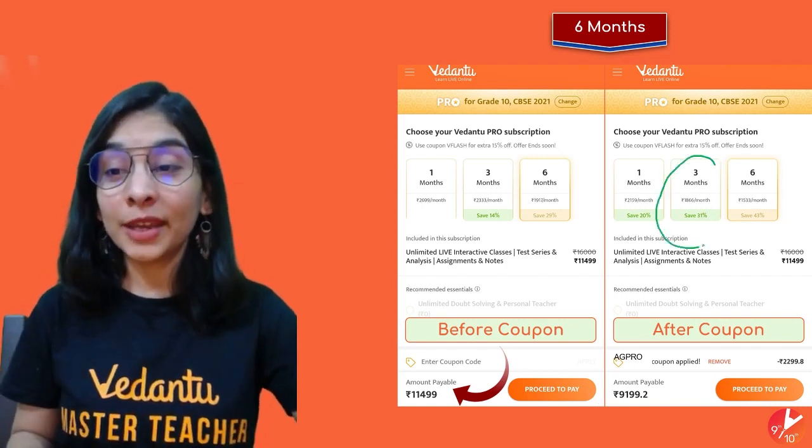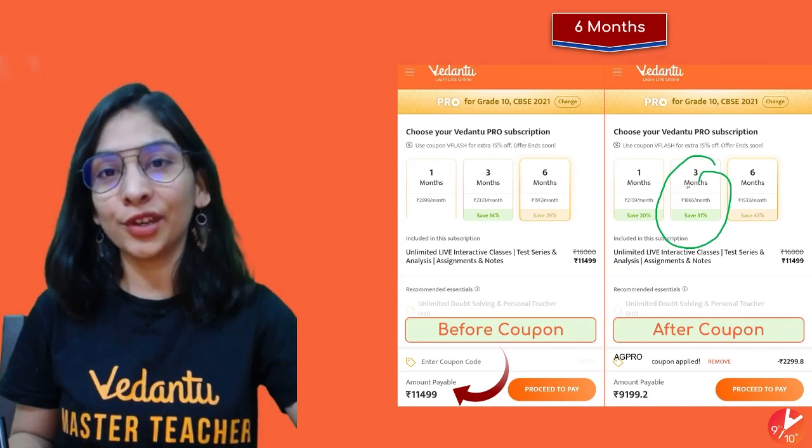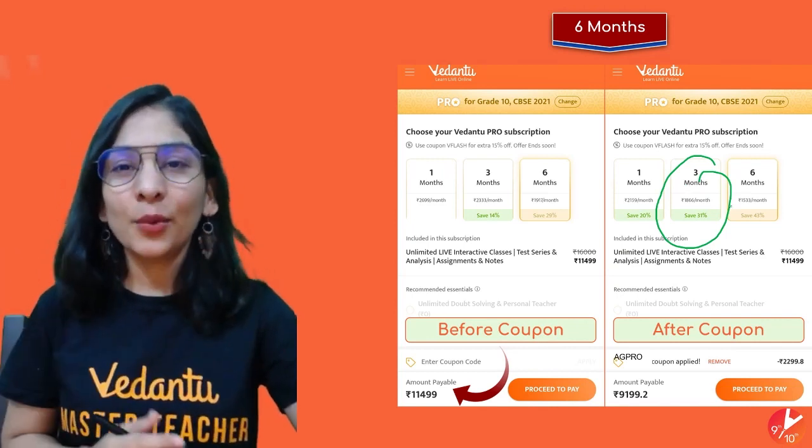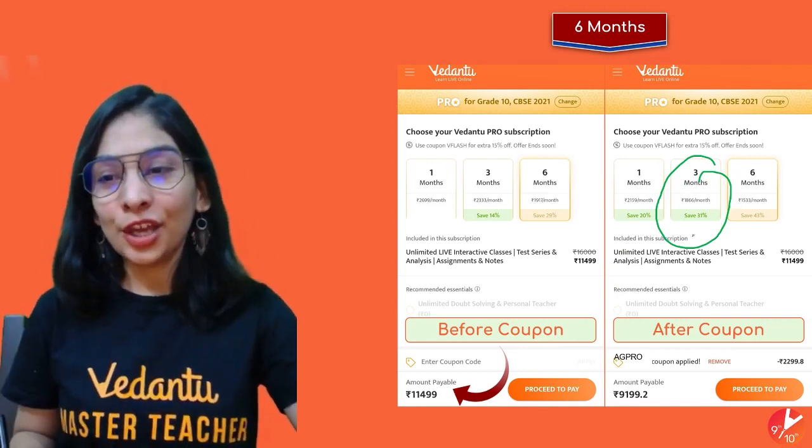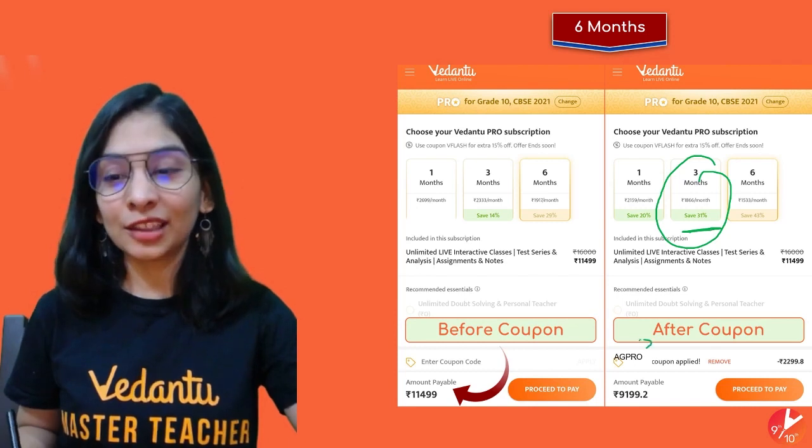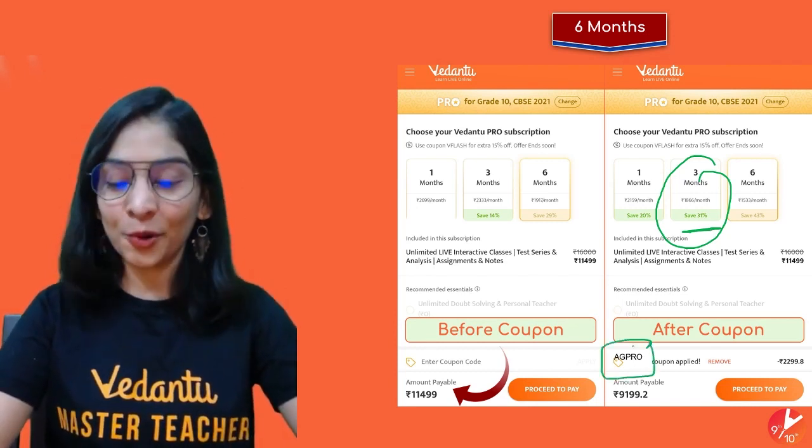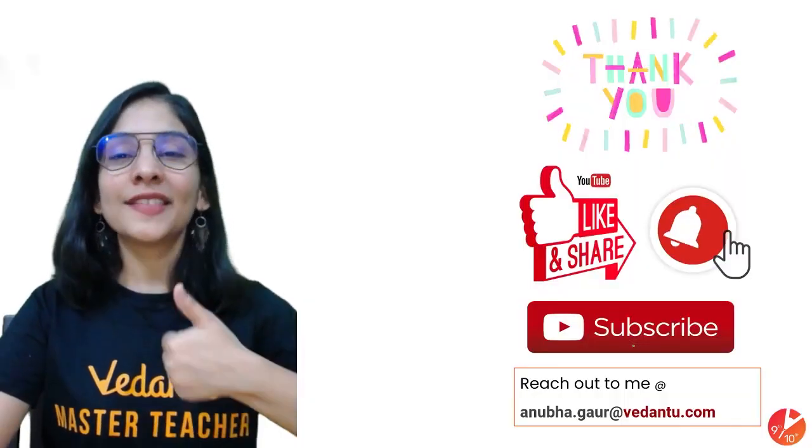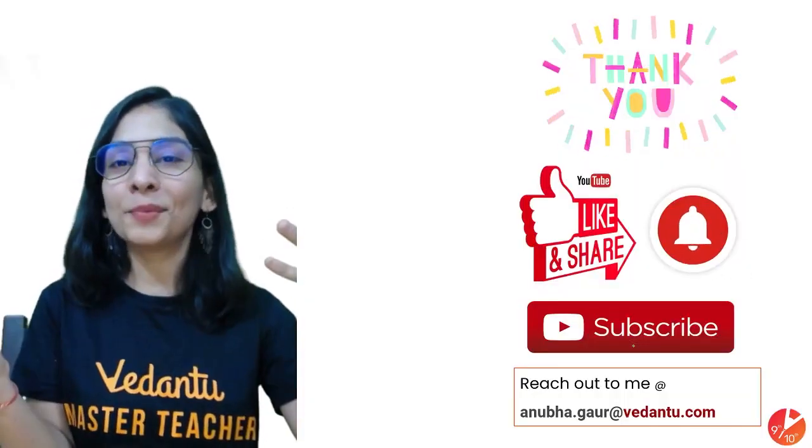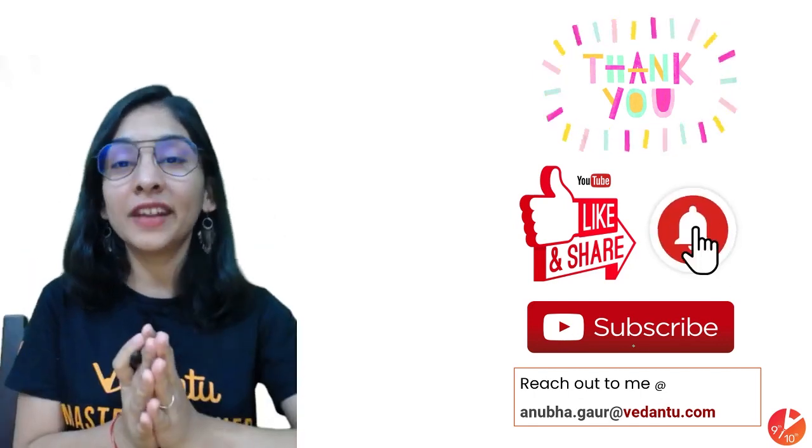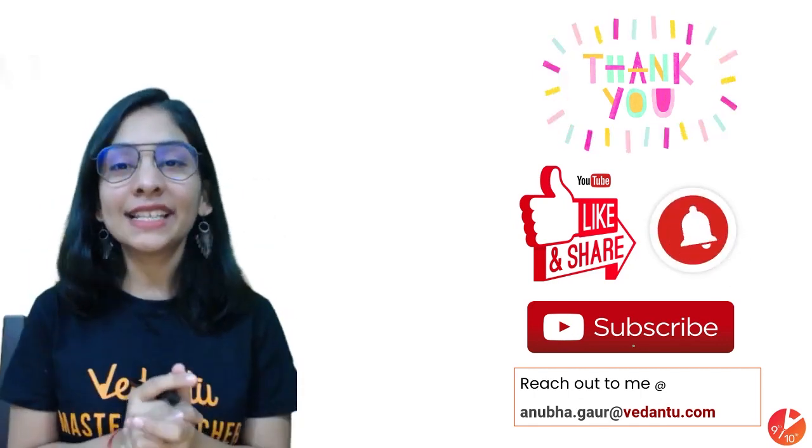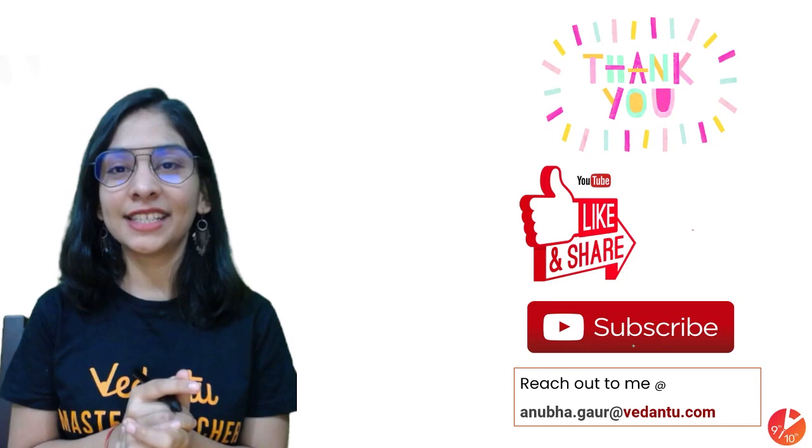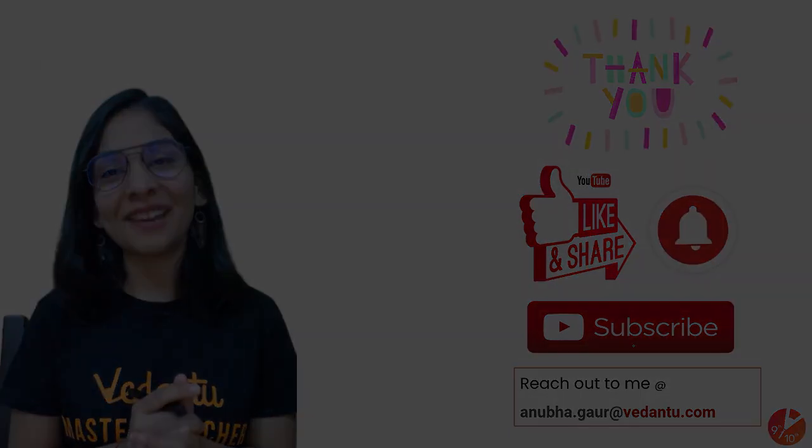But I think three months will be more beneficial at this moment for you. Six months will be much more. One month is more of like a trial. You'll save 31% if you apply AG ma'am's code, that's AGPRO. Do not forget that. And you know everything now. So thank you for watching. Stay tuned for upcoming videos. Keep liking, sharing it to your friends, and definitely subscribe to the channel if you haven't done it yet. Thank you so much. I'll meet you next time. Bye.